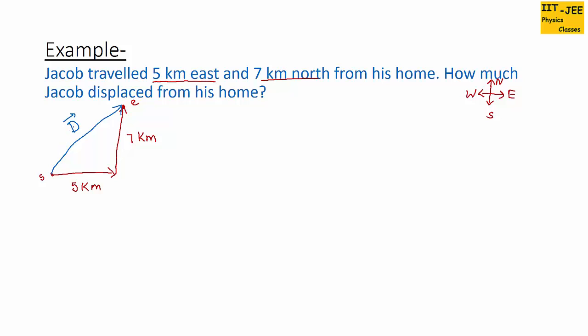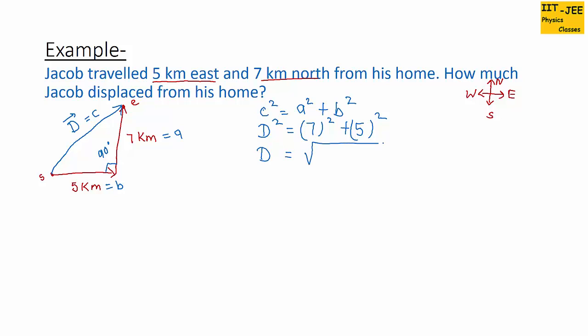This one is the starting point and this one is the end point, so he displaced this much distance. We have to find the magnitude and direction of displacement vector d. To find the magnitude, we use the Pythagorean theorem since it's a right angle triangle: d² = 7² + 5², so d = √(49 + 25) = 8.6 kilometers.